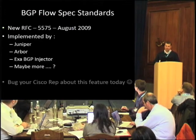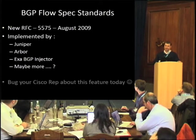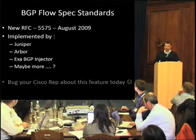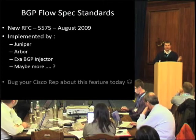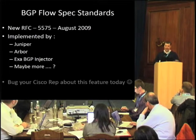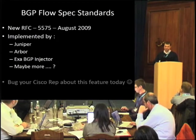If you want to read more about the protocol before doing anything with it, it's RFC 5575, which was only made formal last summer. It has been implemented by Juniper for your routers, Arbor as we saw earlier, and the new BGP injector from EXA.